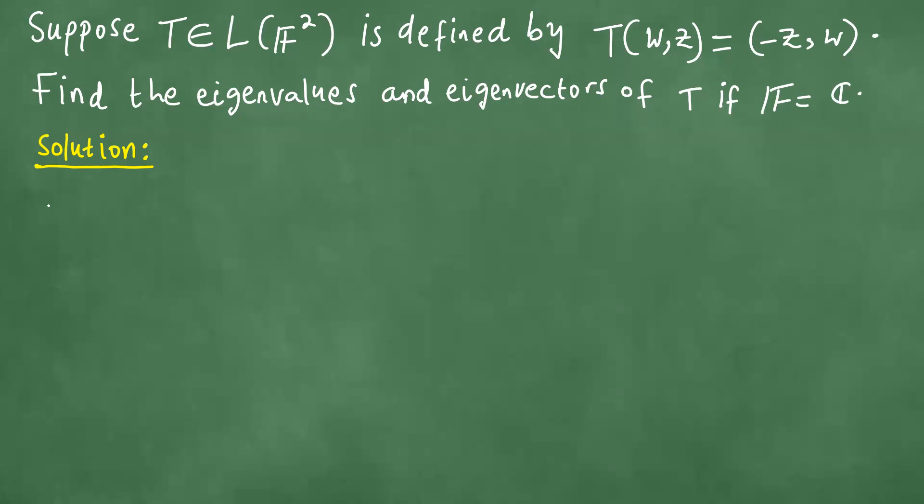To solve this problem, we begin as follows. We start by saying let T(w,z) = λ(w,z).